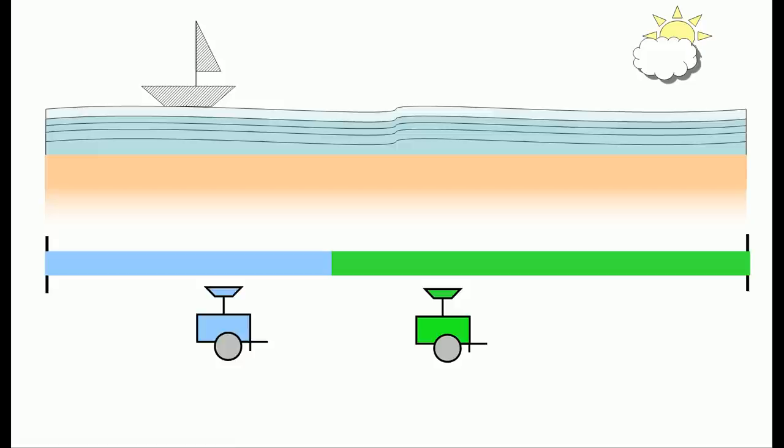The blue stand thinks about the situation and decides that it can get its customers back by moving closer to the center as well. So the blue stand moves over to the center and it regains some of its customers.